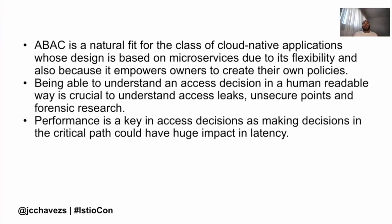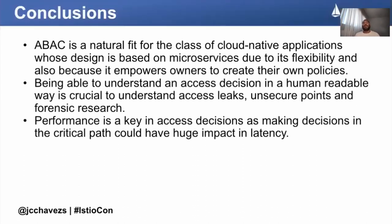In conclusion: ABAC is a natural fit for cloud-native applications because in a microservices world, teams need independence — they need to create their own attributes and can't only work with what the security team creates. Attributes give them flexibility to create their own policies. Being able to understand an access decision in a human-readable way is crucial for understanding access leaks and forensic research. Performance is key in access decision-making since decisions happen in the critical path — every request goes through the Policy Enforcement Point, which could have an acute impact on latency.